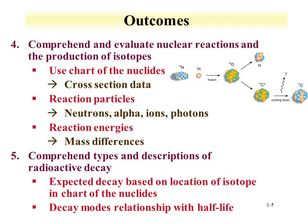We'll explore and evaluate nuclear reactions and isotope production, using data such as cross-section data. Reaction particles — neutrons, alpha particles, ions, or photons — can force nuclear reactions. We'll also discuss energetics of reactions using E=mc². For example, nitrogen-15 and a proton can make oxygen-16, with an alpha particle escaping to produce excited carbon-12, which decays via photon to ground-state carbon-12.